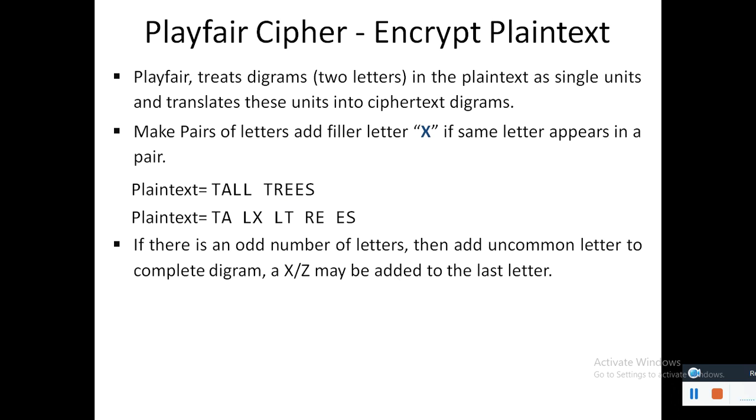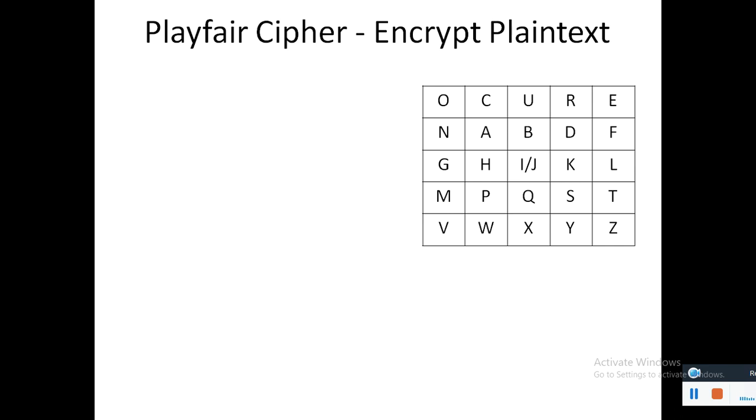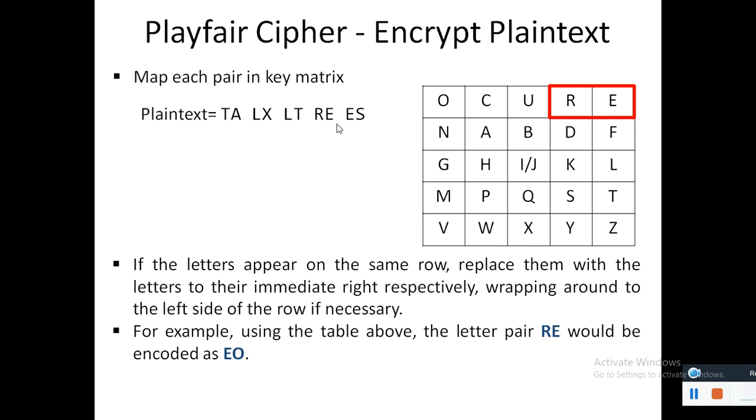Now here is our matrix which we have constructed previously, and how does this actually work? We have to find the combination. Let's see R and E, it has occurred in the same row. If it is the case, then the pair R-E would be encoded as E-O.